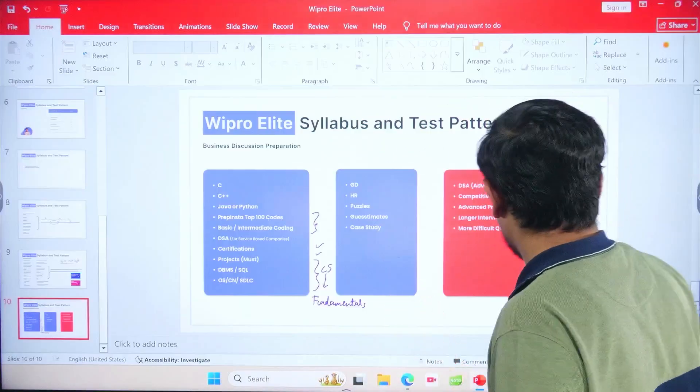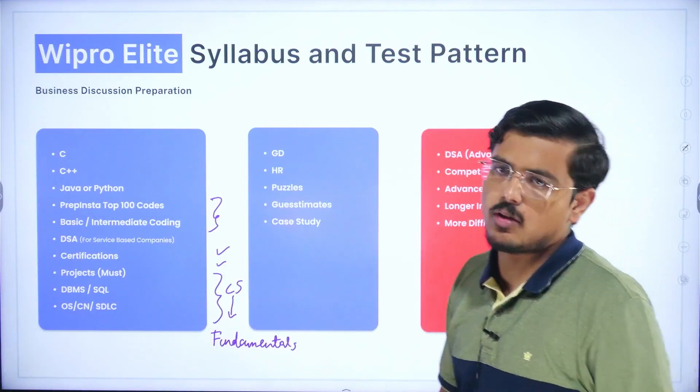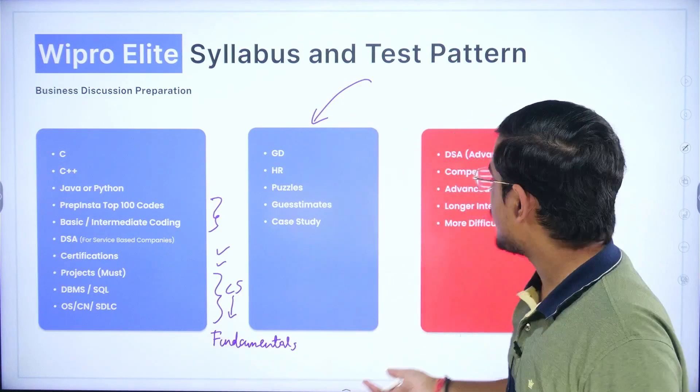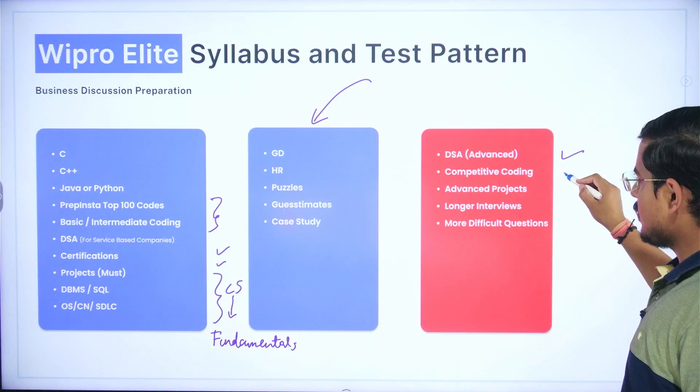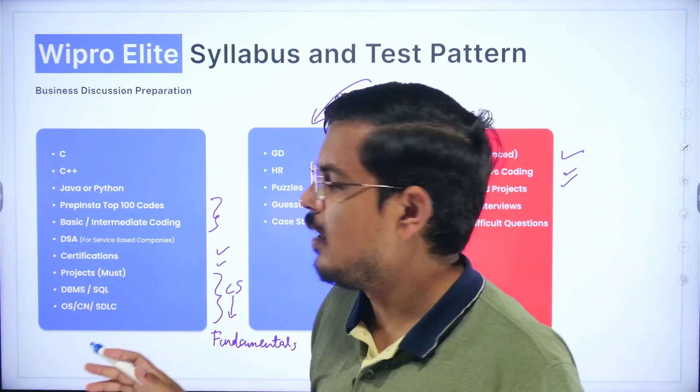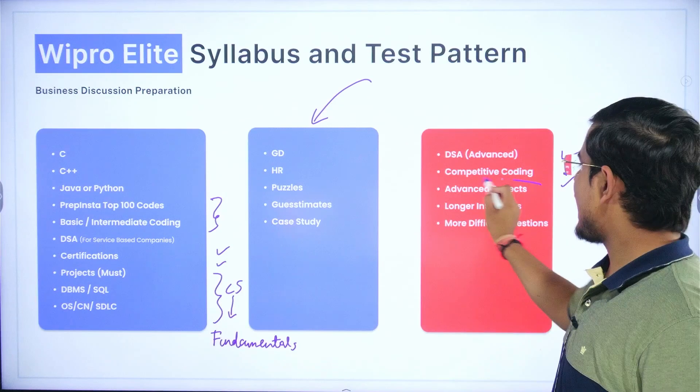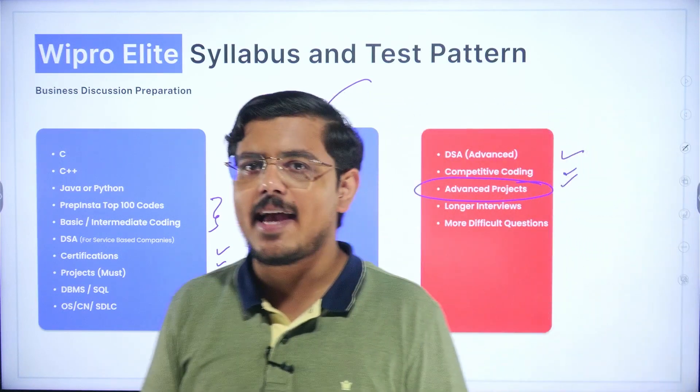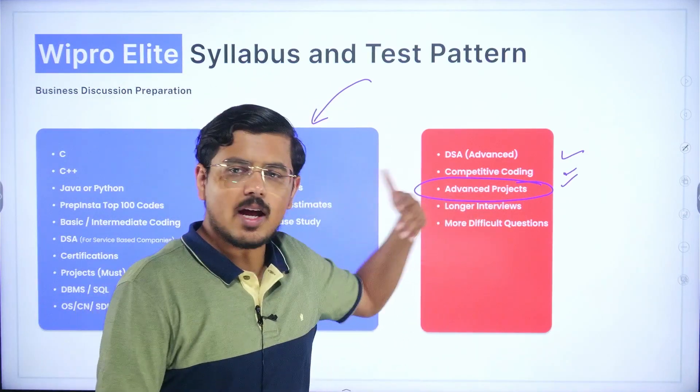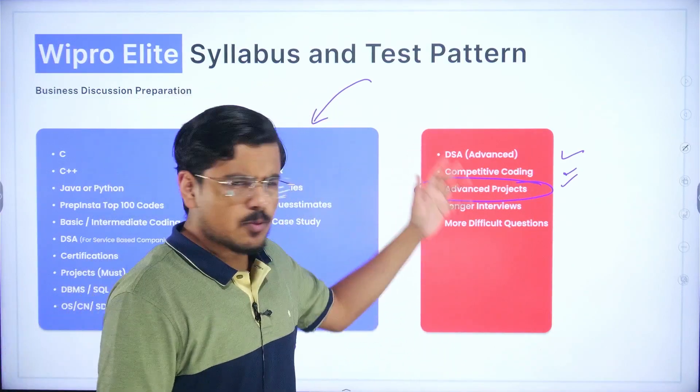Then you have to prepare for the HR round. The business discussion would involve some HR components as well. So here GD, HR, puzzles, guesstimates, this you have to prepare and some advanced DSA and some advanced projects or a bit of competitive coding. Generally competitive coding is not asked in Wipro but if you are good at it you must do it, that's an extra element of preparation. But you must have one advanced project with you because that gives you an extra edge of selection. That would cement the possibilities of yours to get selected in Wipro.